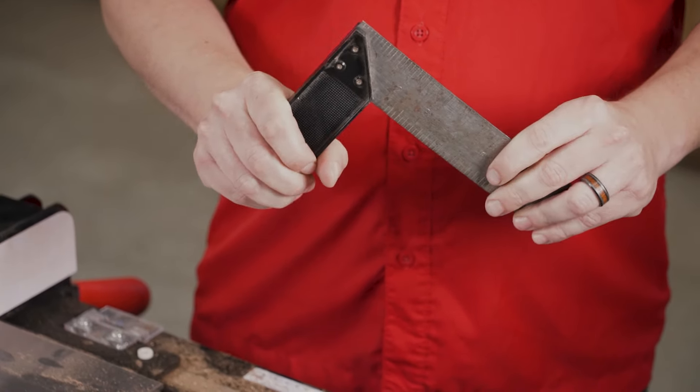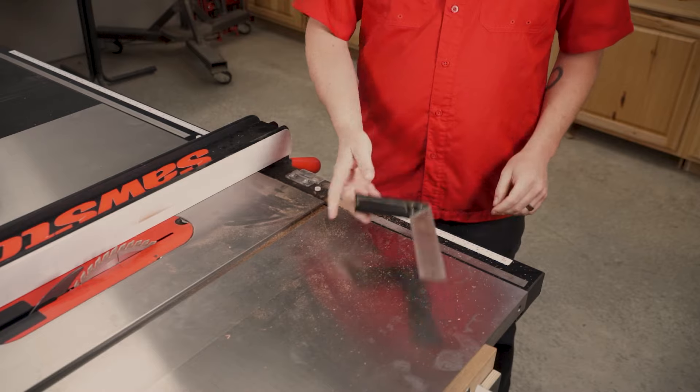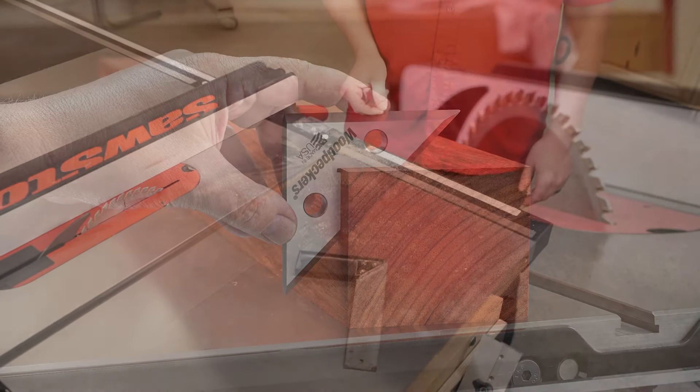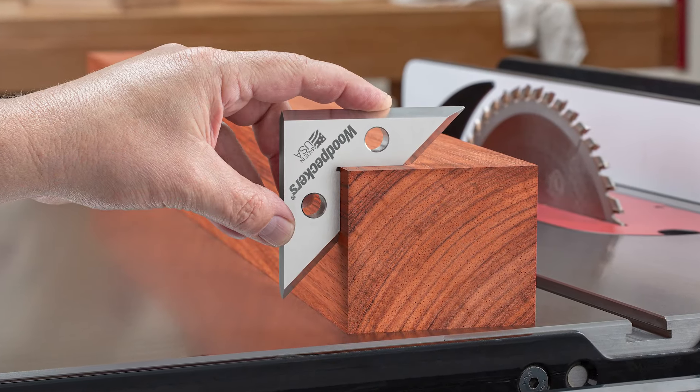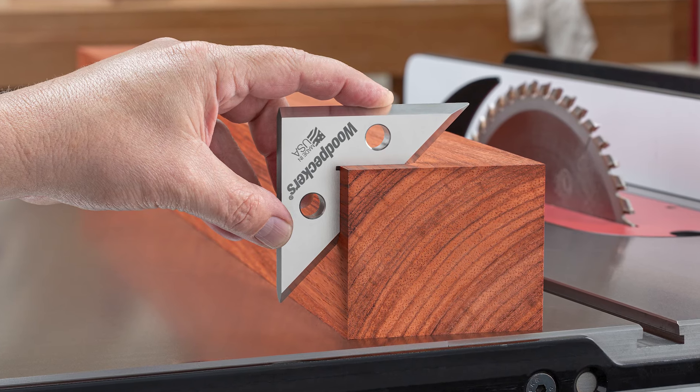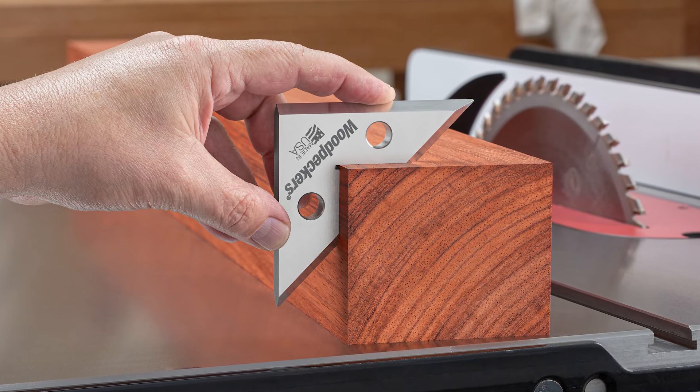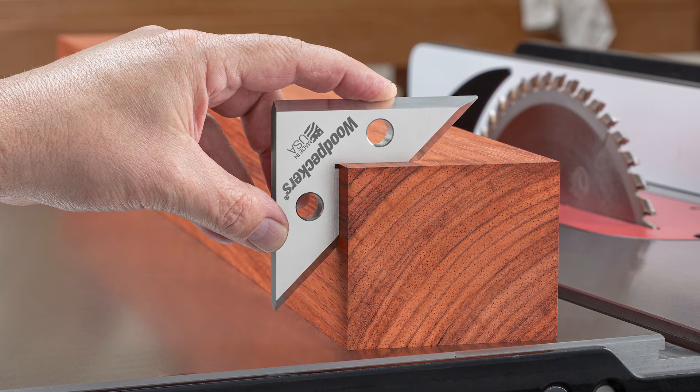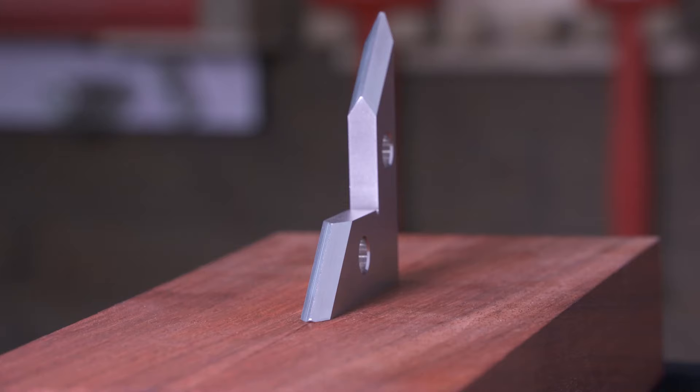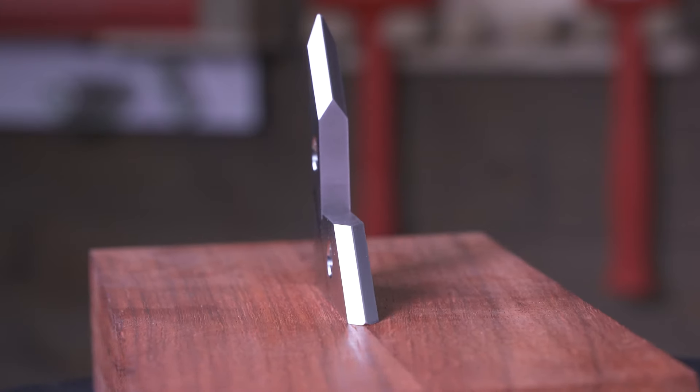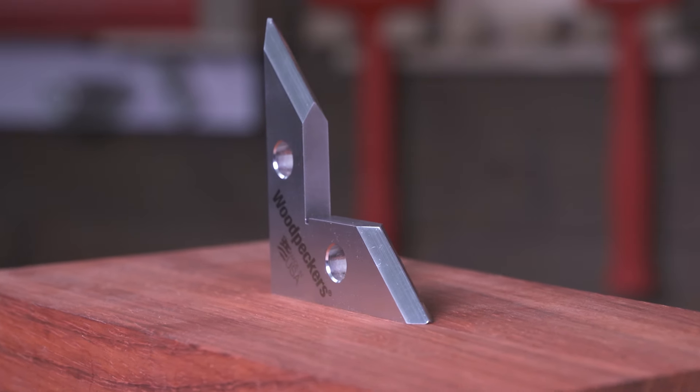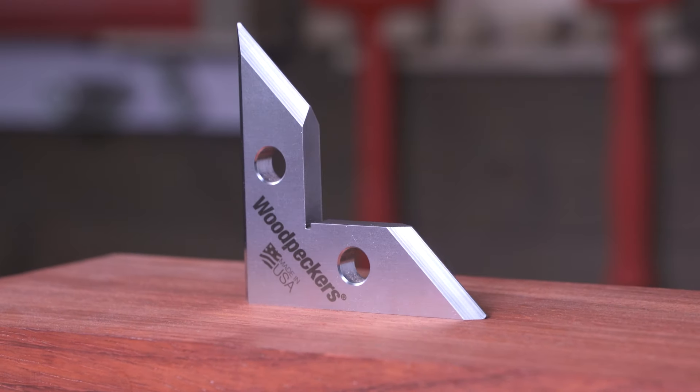Most shop squares are made with multiple pieces joined together which invites inaccuracy. The deadnut square is made from one piece of solid three-eighths inch thick stainless steel cut with wire electrical discharge machining, or wire EDM. It brings micron level machining accuracy and the strength and durability of stainless steel into your workshop.